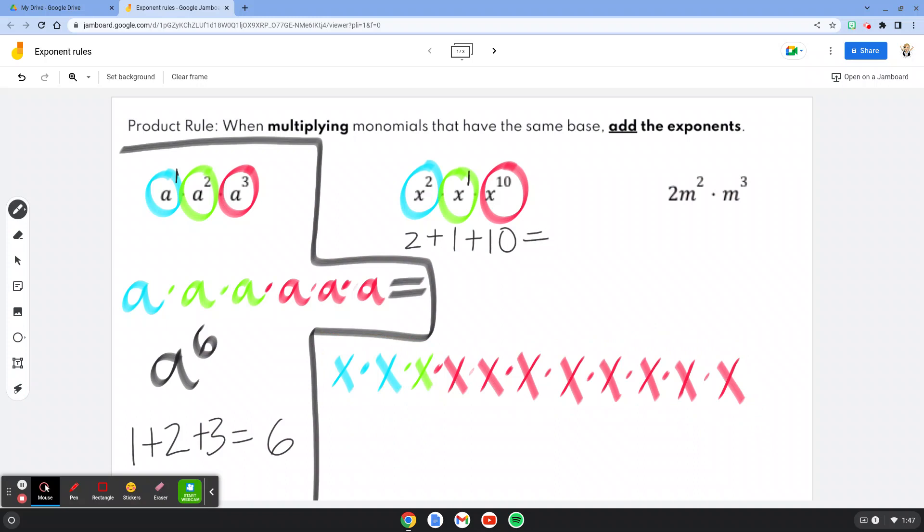So I know 2 plus 1 is 3. 3 plus 10 is 13. So my exponent's going to be 13. x is my base, because that's what we're multiplying over and over again. And then 13 is the exponent. So this would be your simplified version.